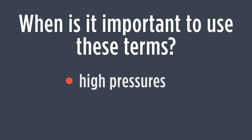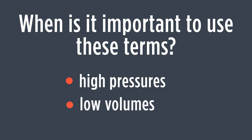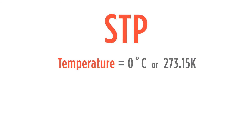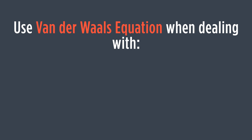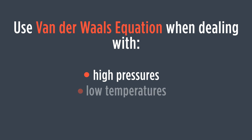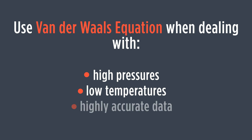When is it important to use these two terms? It's important when we get to very high pressures or very low volumes, or combinations of both. If we're dealing with normal STP values — standard temperature and pressure, where temperature is 0°C or 273.15 K and pressure is one atmosphere — the ideal gas law is pretty close. We do need to consider van der Waals' equation whenever we're dealing with incredibly high pressures or very low temperatures.